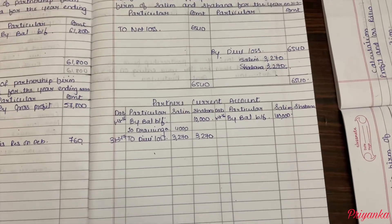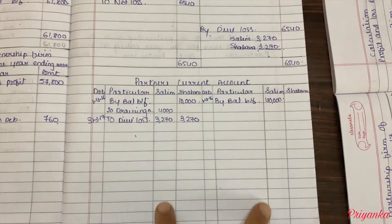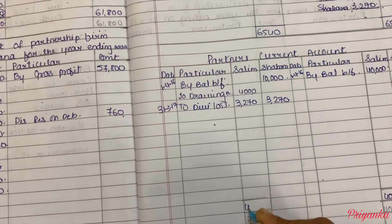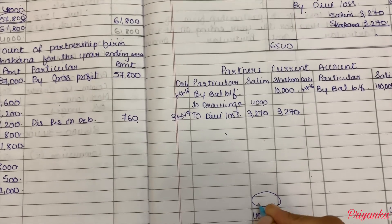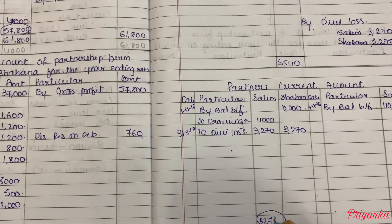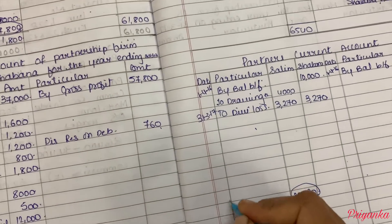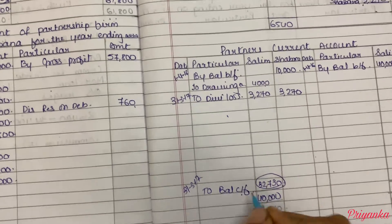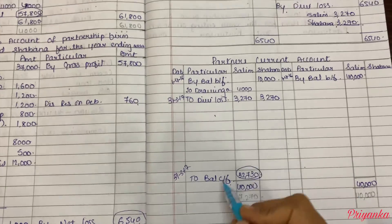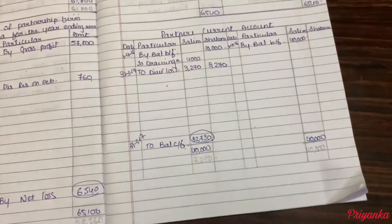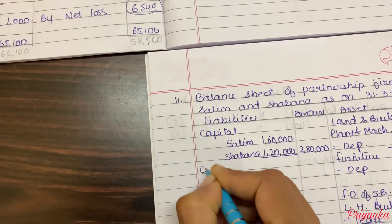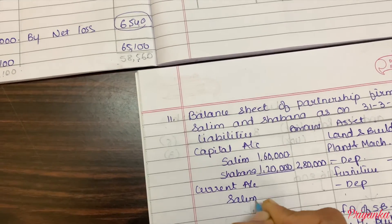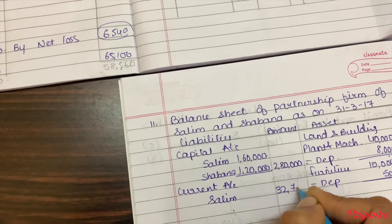This divisible loss will move here by writing 31st March 2017 — divisible loss: 3,270 for Salim and 3,270 for Shabana. Now we will make the calculation. We will do for Salim's salary first. This side is more, so taking 40,000 at both sides, we get the difference of 32,730. That is your 31st March 2017 balance carried forward — that is your closing balance. This closing balance is on the debit side of the current account, so it will move to the liability side: current account for Salim is 32,730.